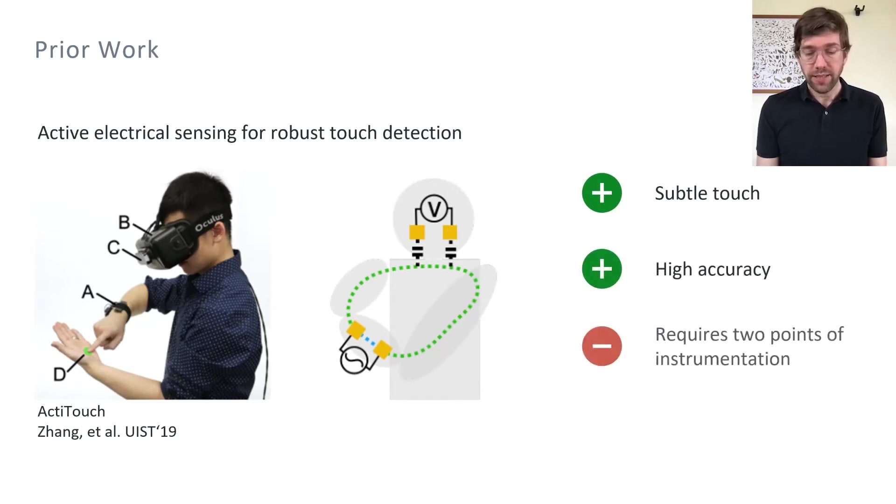One drawback, however, is that it requires two points of instrumentation, a transmitter on the wrist and a receiver on the headset.